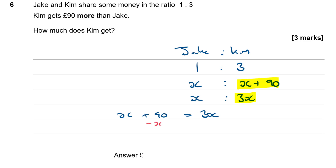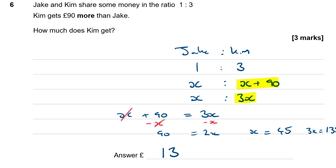Let's take X away from both sides. That leaves 90 on the left and 2X on the right, which means X is equal to 45. So if X is 45, then 3X is three lots of 45 — 45, 90, 135. Which means Jake gets 45 and Kim gets 135. So how much does Kim get? Kim gets 135 pounds.